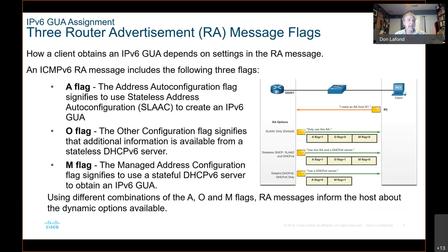The O flag — the other configuration flag — signifies that additional information is obtainable from the stateless DHCPv6 server. So the host is going to use some of the information it gets from the router to be able to create its own address, but then the host is going to reach out to a server, and that server will give it things like its domain and DNS server.